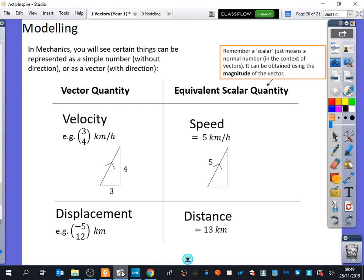Anyway, we can do modeling with vectors as well. In mechanics, you will see that certain things can be represented as a simple number without direction or as a vector with direction. So we have two different things: the vector quantity or the equivalent scalar quantity.